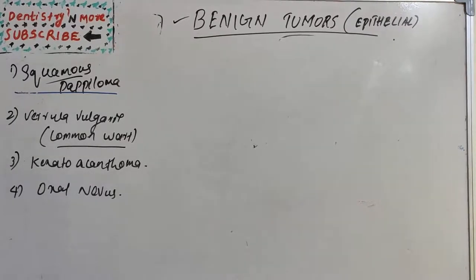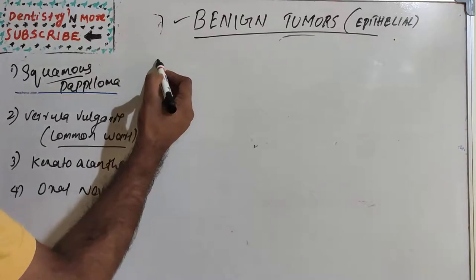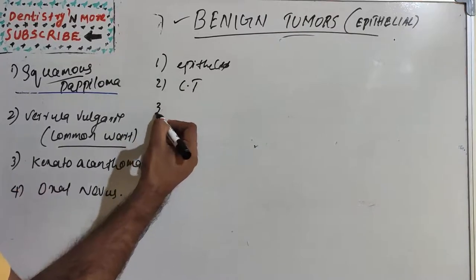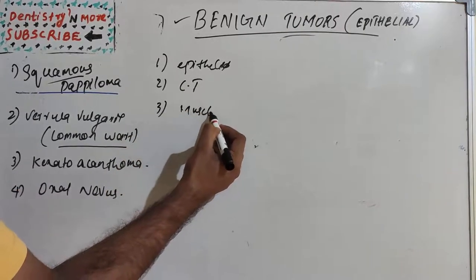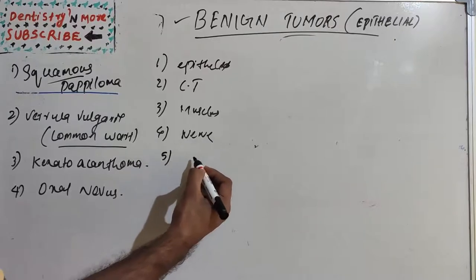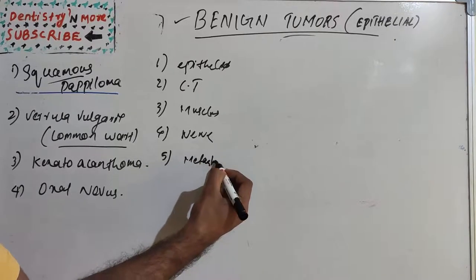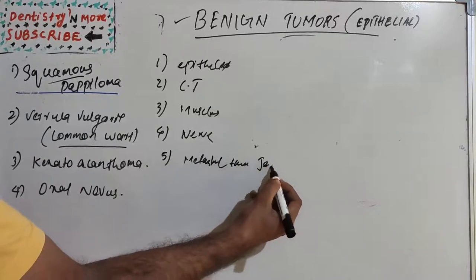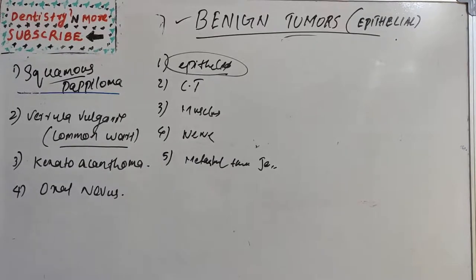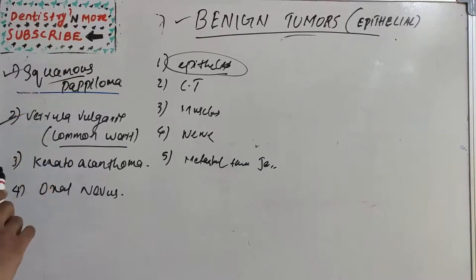The tumors of the oral cavity can be divided based on the tissue of origin. There are basically five types: epithelial in origin, connective tissue in origin, muscular, nerve tissue, and tumors of the jaw including metastatic tumors. Today's session focuses on epithelial benign tumors of the oral cavity — specifically squamous papilloma, verruca vulgaris, keratoacanthoma, and oral nevus.